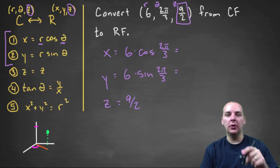Cosine of 2π over 3 on the unit circle would be negative one half, so it'd be 6 times negative one half, so that'll be negative 3.